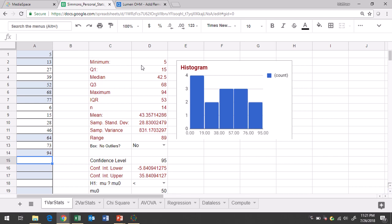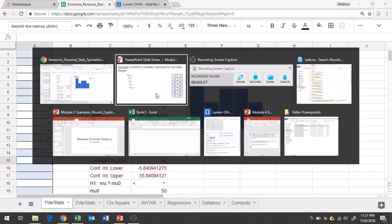So the five number summary would be the first five rows you see over here on the side. You have the minimum, quartile one, median, quartile three, and the maximum. So that would be the answer to our question.